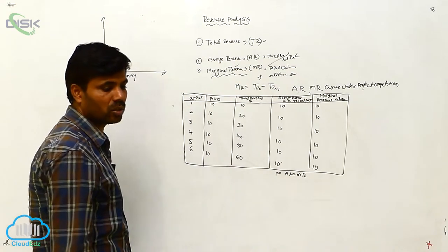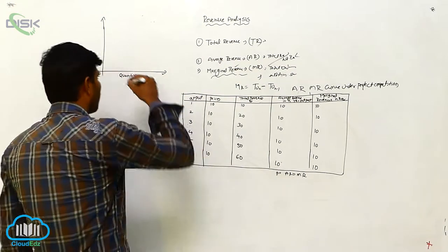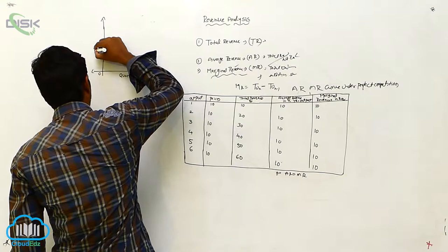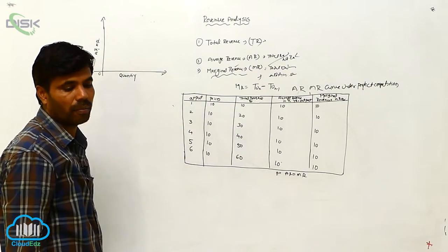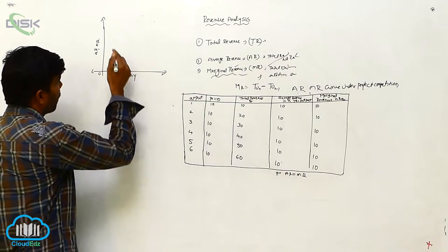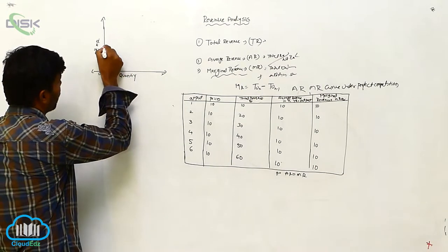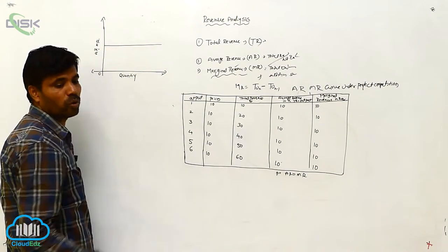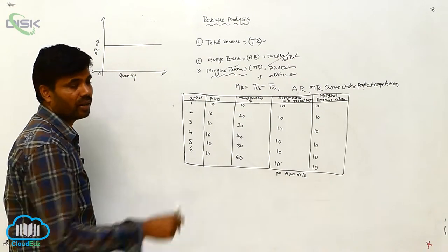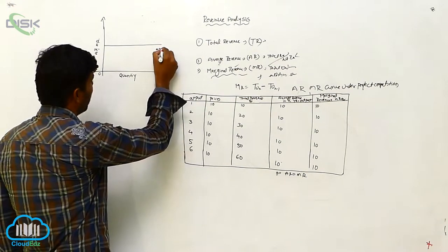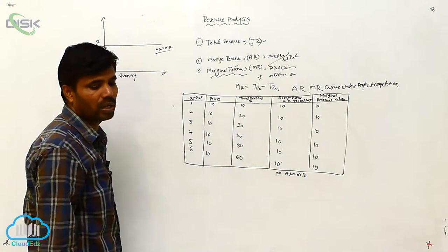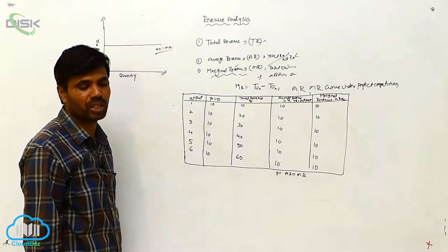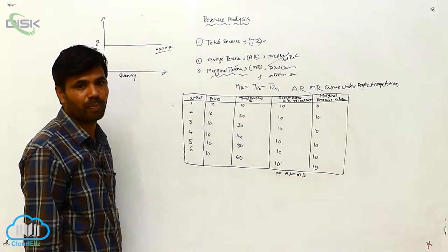And here also that one: A, R and M, R. This is a curve going to the straight line — A, R is equal to M, R. There is no change at all from this.